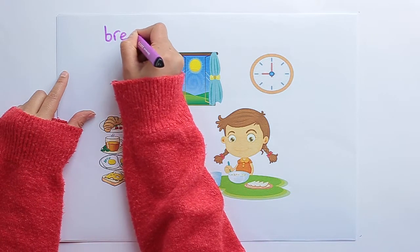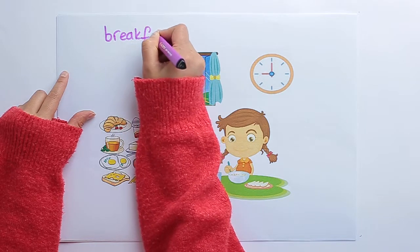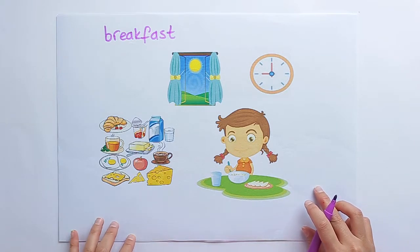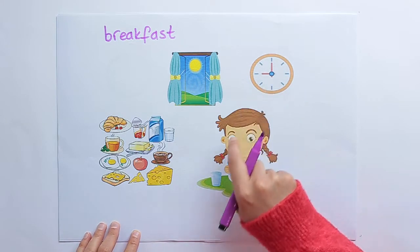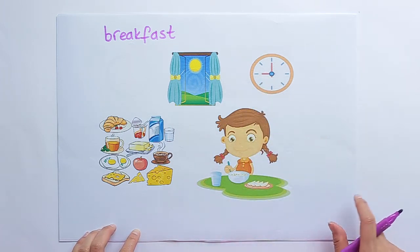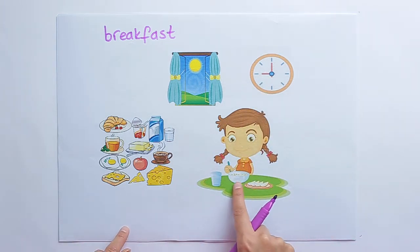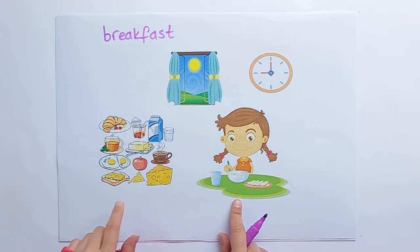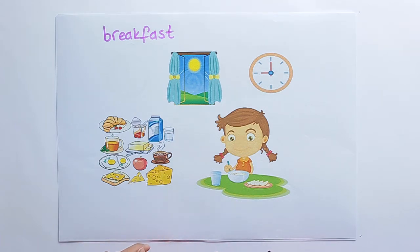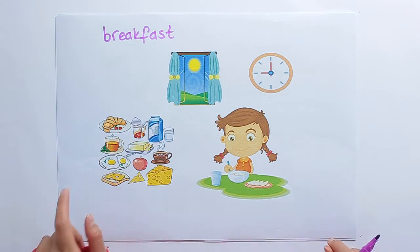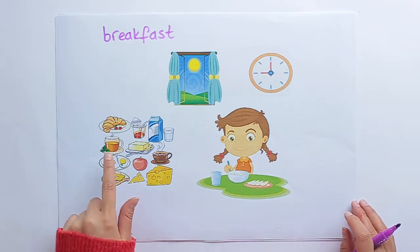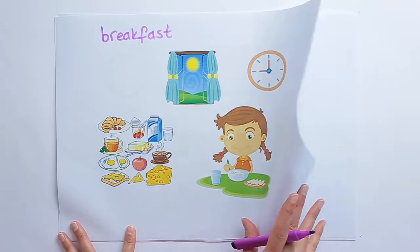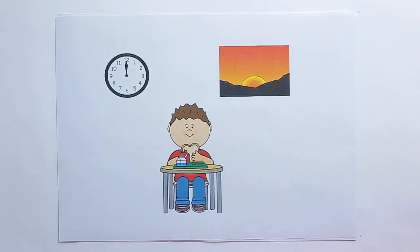Let's look at breakfast. In the morning we have breakfast. What time is it? It is nine o'clock. So we have breakfast. We can eat cereals and we can drink milk. We can eat cheese, apple, egg, and butter. And we can drink tea and coffee. That's breakfast.